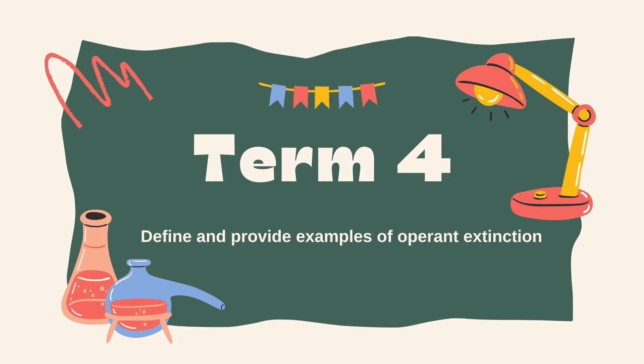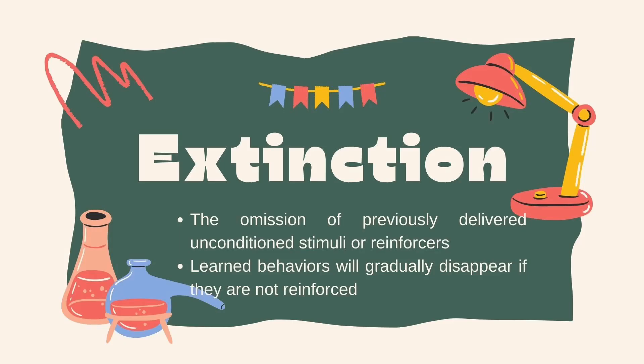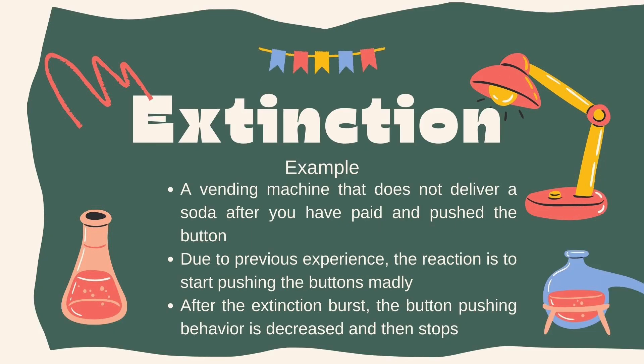The fourth section is operant extinction. Operant extinction is a behavior modification technique that involves ignoring or withholding reinforcement for a previously reinforced behavior. In operant conditioning, reinforcement is anything that strengthens a behavior, so operant extinction is the process of removing that reinforcement to weaken or extinguish the behavior. For example, a vending machine that does not deliver a soda after you have paid and pushed the button — due to previous experience, the reaction is to start pushing the buttons madly. After the extinction burst, the button-pushing behavior decreases and then stops.